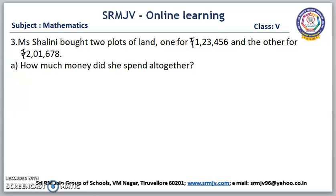The first question is: Ms. Shalini bought two plots of land, one for Rs. 1,23,456 and the other for Rs. 2,16,678. How much money did she spend altogether? For this, we have to add the money spent for the first land and the money spent for the second land. Then we will get the money she spent altogether.